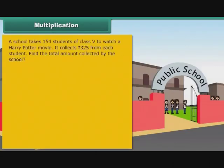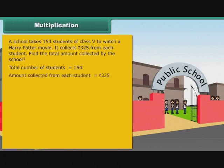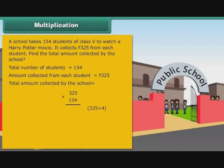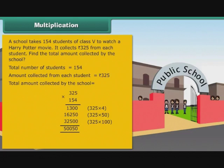A school takes 154 students of class 5 to watch a Harry Potter movie. It collects Rs. 325 from each student. Find the total amount collected by the school. Total number of students: 154. Amount collected per student: Rs. 325. Total amount is 325 multiplied by 154. First, multiply 325 by 4; then multiply 325 by 50; finally, multiply 325 by 100. We add the three products to get 50050. Therefore, the school collected an amount of Rs. 50,050.